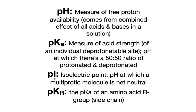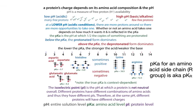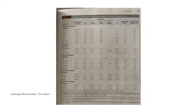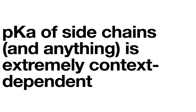One of the most common places you see the term pI is in use with proteins. We have those 20 main amino acids and some of them are ionizable — some of them can give and take protons. Each of these ones that can give and take a proton is going to have its own pKa, and we call these pKr's. The ones we talk about most often are going to be our acidic and our basic ones.